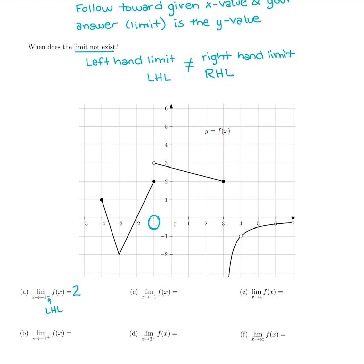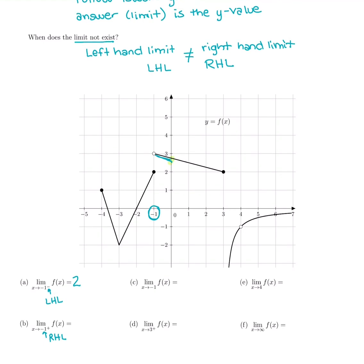The one below has negative 1 with a positive after the number, so we're going to approach it from the right-hand side — the positive side of the number line is the right side. We're still going to approach negative 1, but coming in from the right. Following this graph from the right, maybe above 0 is where I would look. We follow in toward X = negative 1, and from the right-hand side, the Y value is 3.